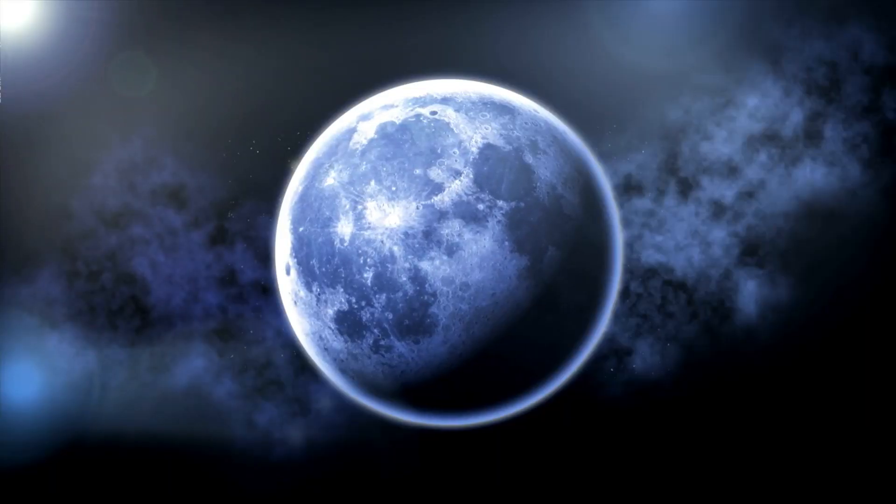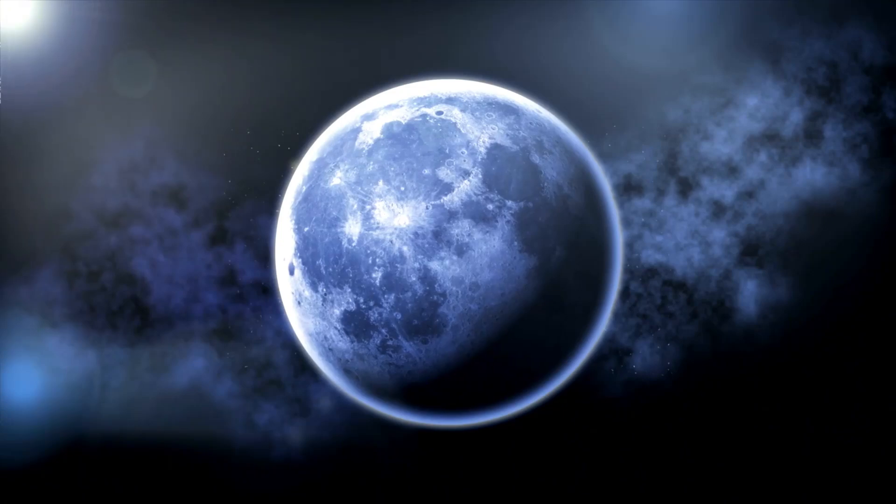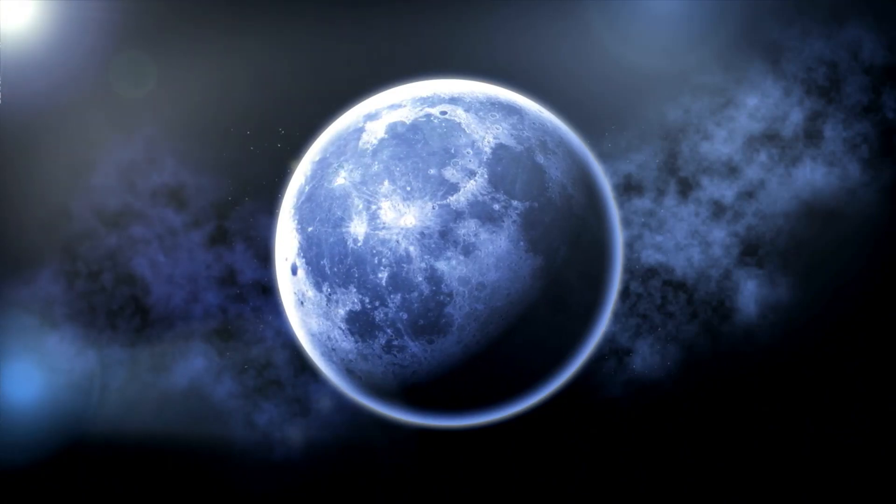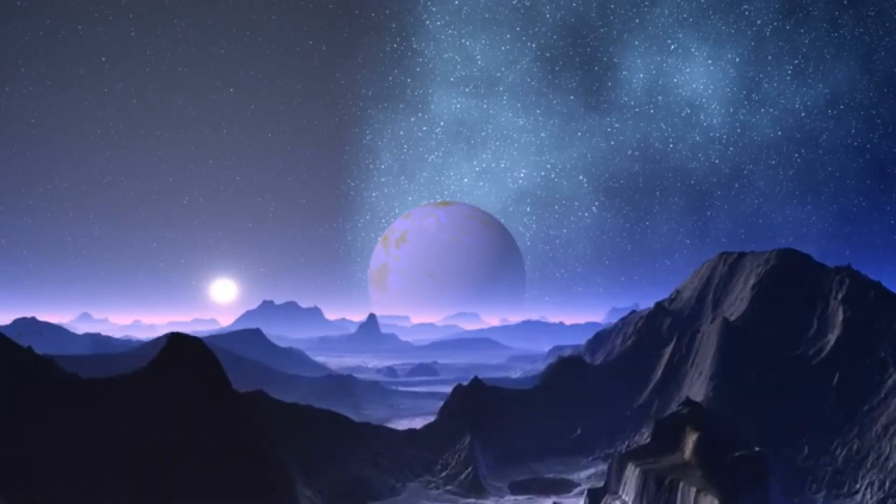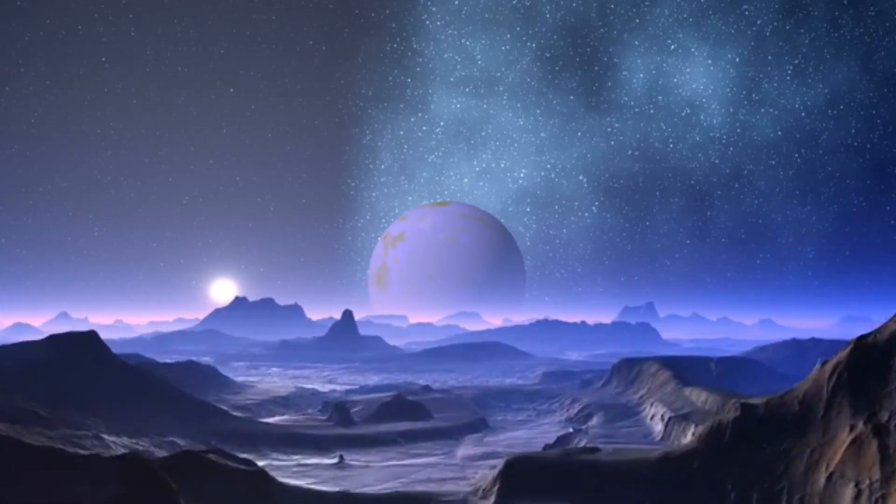But that's not all. There are also hot Jupiters, gas giants that orbit incredibly close to their host star. They exist in a scorching environment with temperatures high enough to melt metal. Imagine being able to observe such a planet up close, with its seething storms and intense heat.